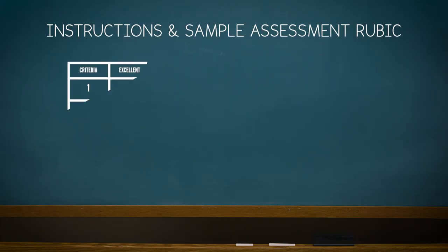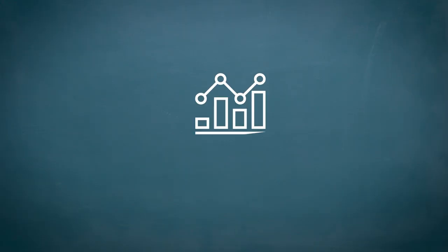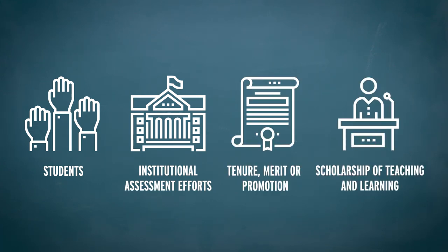Determine an appropriate evaluation rubric and decide who will be involved in the assessment. Detailed instructions and a sample assessment rubric are available in our free downloads. Use the rubric to assess the performed role plays, then add up the individual scores on each rubric trait and determine a class average. Those results can serve as the basis for reporting course level learning outcomes to a variety of stakeholders.